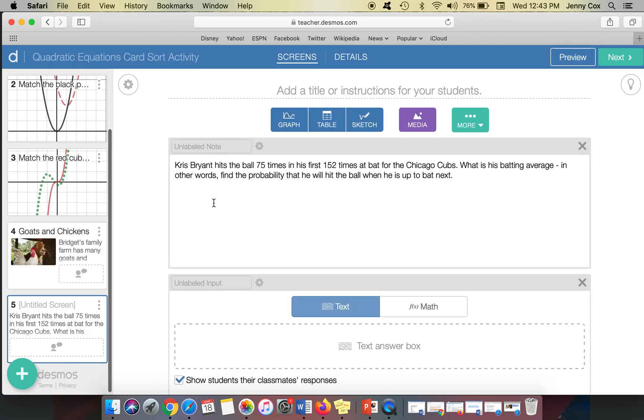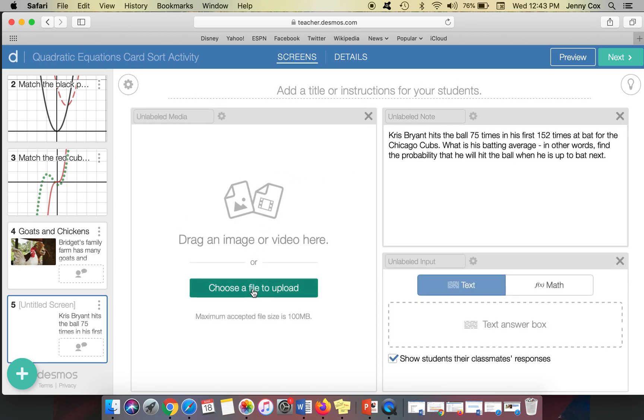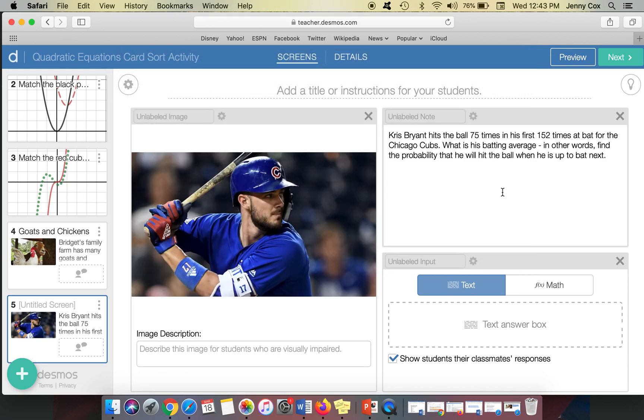Same thing. Maybe you have someone really interested in baseball. So my favorite baseball player is Chris Bryant. So I'm going to go to media and I'm going to choose a file and I have Chris Bryant batting. And so then this problem is about a batting average. So you're working in your students' interests. You can use their names in the problem. You're really trying to engage them in the learning.